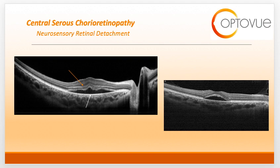Just to emphasize: on the left-hand side of the slide, the orange arrow is pointing to the neurosensory retina and the white arrow is pointing to the RPE. Notice that the fluid is above the level of the RPE.